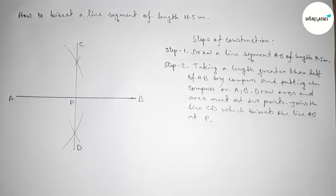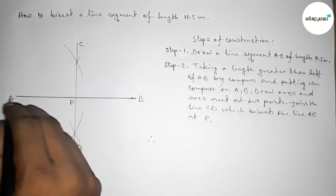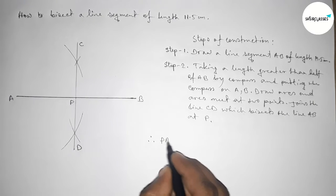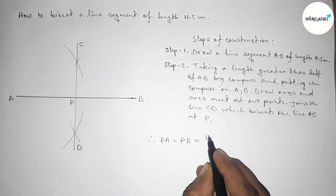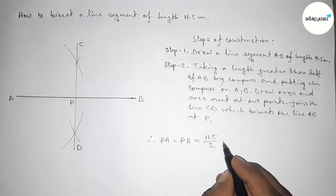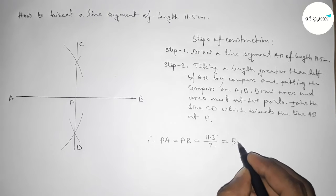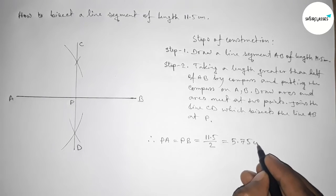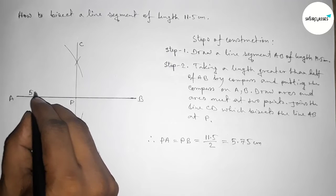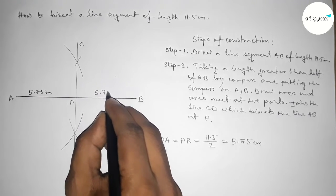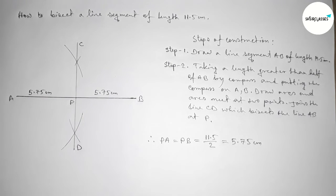So therefore, here the line length PA equals to PB equals to 11.5 by 2. So this is 5.75 centimeters. This length is 5.75 centimeters, this length is 5.75 centimeters. So that's all. Thanks for watching. If this video is helpful to you, then please share it with your friends. Thanks for watching.